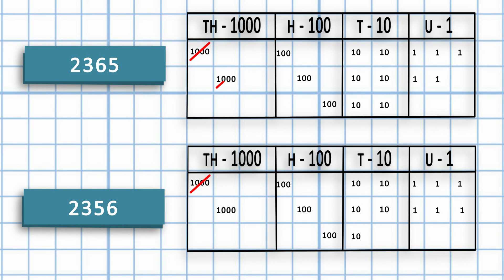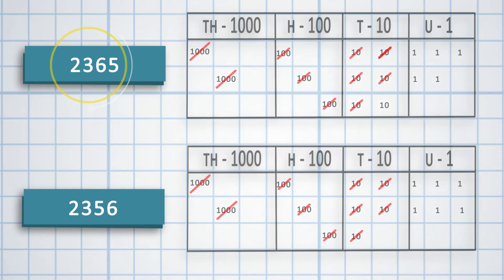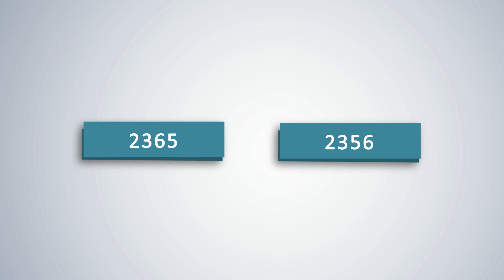Now compare and strike the 100s in both numbers. These are equal as well. Now compare and strike the 10s in both numbers. 2,365 has one 10 more than 2,356. Now there is no need for further comparison. 2,365 is greater than 2,356.